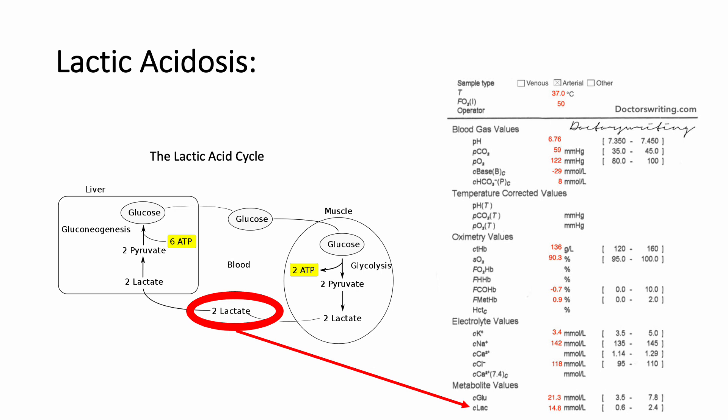While the lactic acid cycle can support function for short periods of time, anaerobic metabolism causes exhaustion and a progressive lactic acidosis if oxygen availability is not restored. This state is tolerated for a few hours at most, after which time cardiovascular and metabolic collapse ensue, resulting in death.